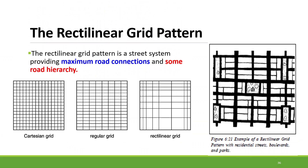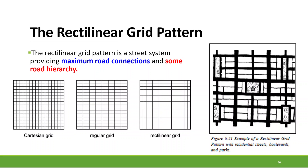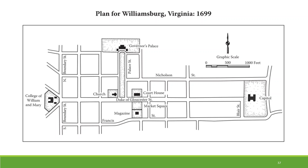Every pattern has pros and cons. The rectilinear grid is predominantly adopted especially in plain areas where the topography is not changing much. It is one of the oldest patterns, also called the Hippodamian grid model, which was very common back in the Greek era and used in old Greek cities. The plan of Williamsburg in 1699 also used the same pattern of development.